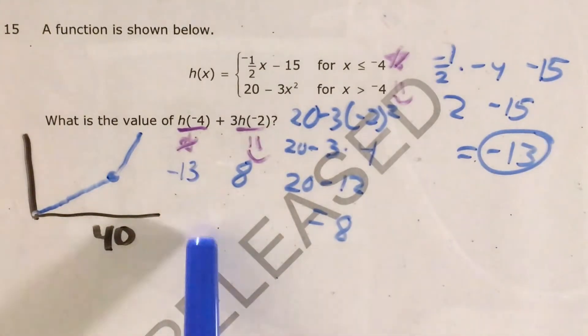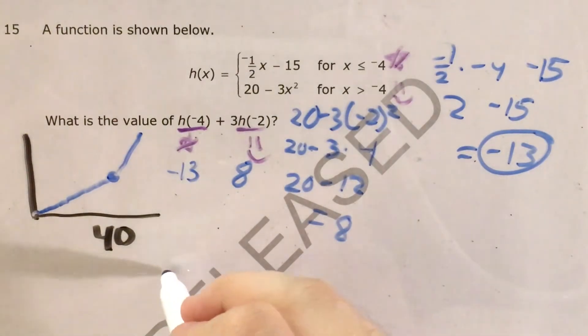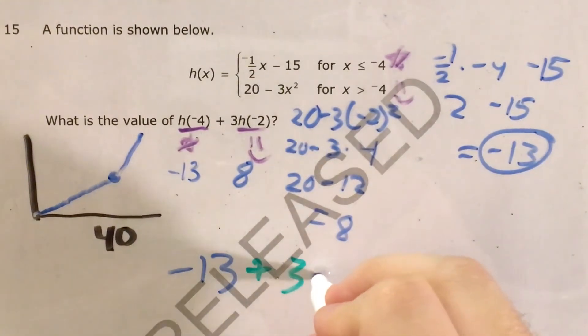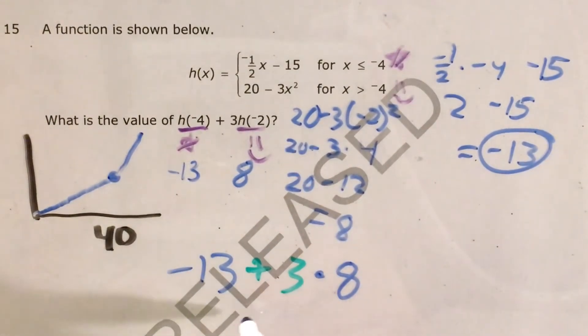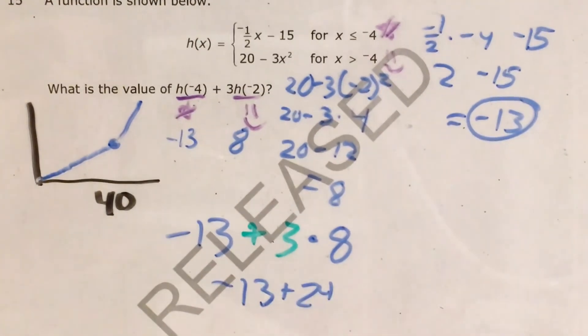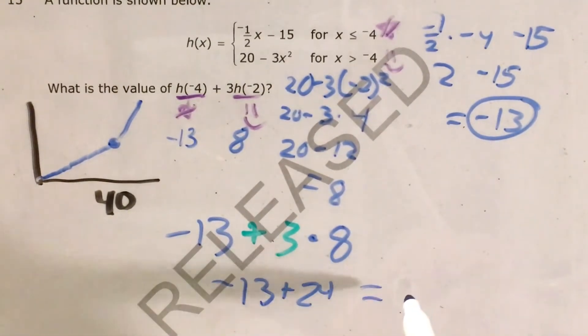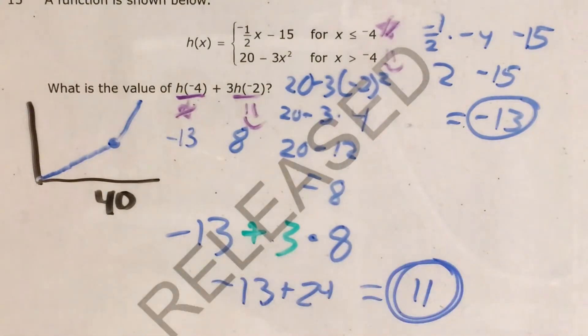Alright, and now we just need to go ahead and actually figure out this expression. So this would be h of negative 4, negative 13, plus 3 times h of negative 2, which got us 8. So 3 times 8 is 24. And negative 13 plus 24 gives us positive 11. So 11 is our answer.